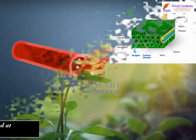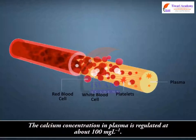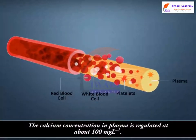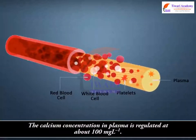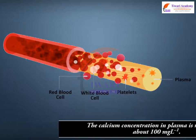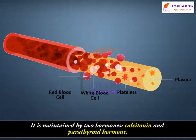The calcium concentration in plasma is regulated at about 100 mg per litre. It is maintained by two hormones: calcitonin and parathyroid hormone.